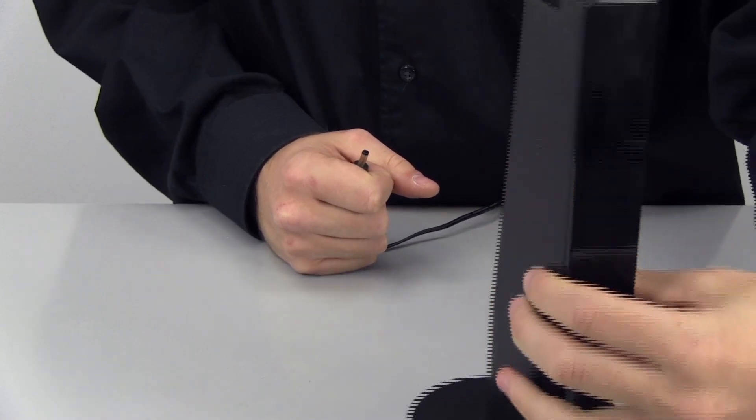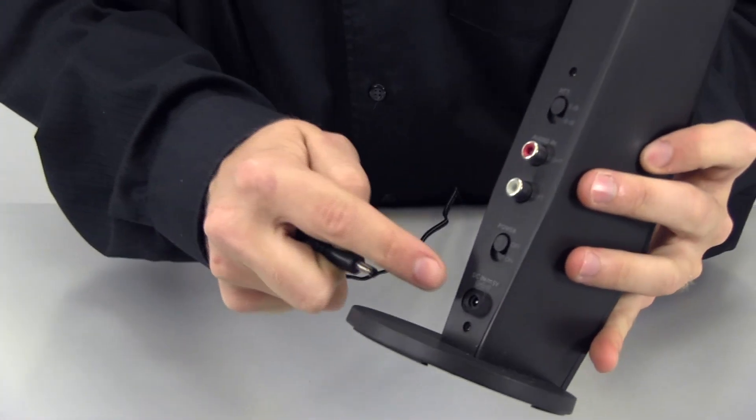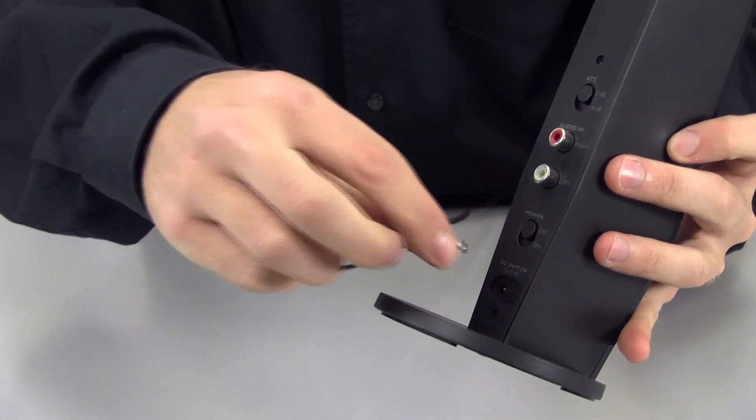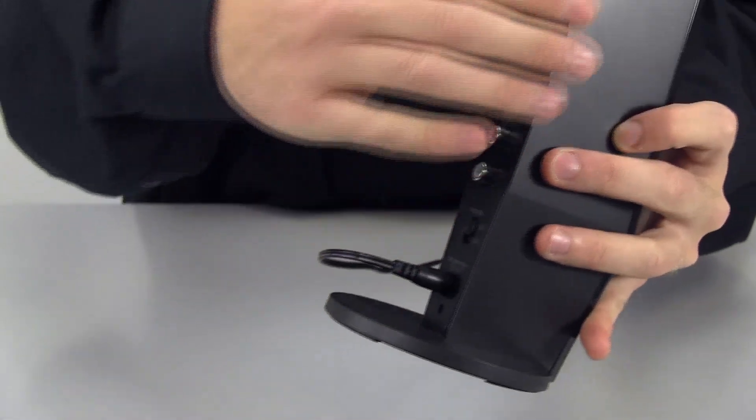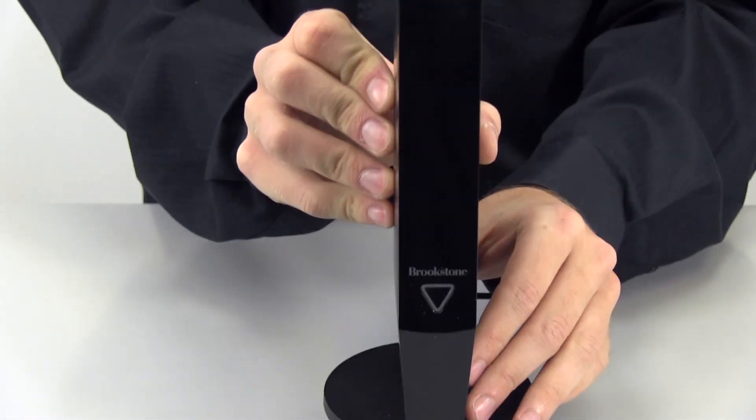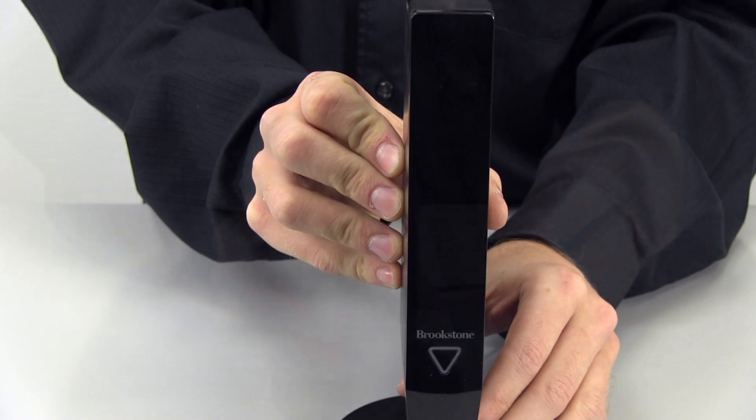Now set up your transmitter near the device that you'll be connecting it to. Once you've identified the location, you can plug the transmitter in using the AC adapter. One end of the adapter will plug into the transmitter and the other end into a standard wall outlet.